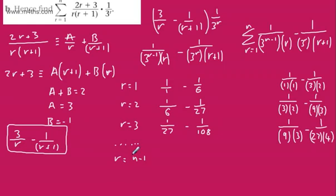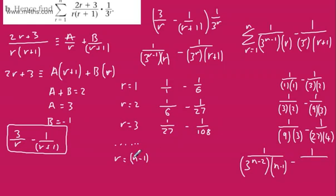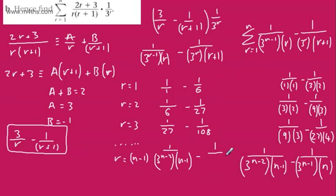When R equals N minus 1: we get 3 to the N minus 1 minus 1, which is 3 to the N minus 2, multiplied by R, which is N minus 1. Then we subtract, putting R equals N minus 1 into the second term: 1 over 3 to the N minus 1, multiplied by N minus 1 plus 1, which is just N. So this gives us 1 over 3 to the N minus 2 times N minus 1, minus 1 over 3 to the N minus 1 times N.